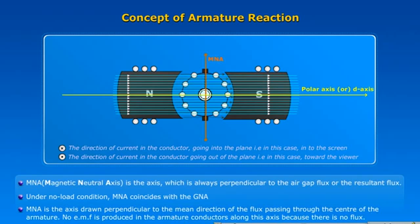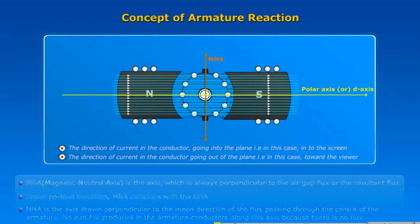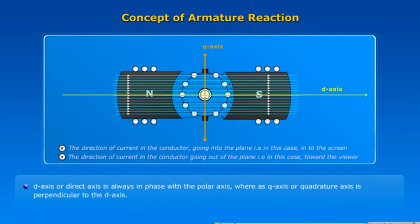No EMF is produced in the armature conductors along this axis because there is no flux. D-axis or direct axis is always in phase with the polar axis.